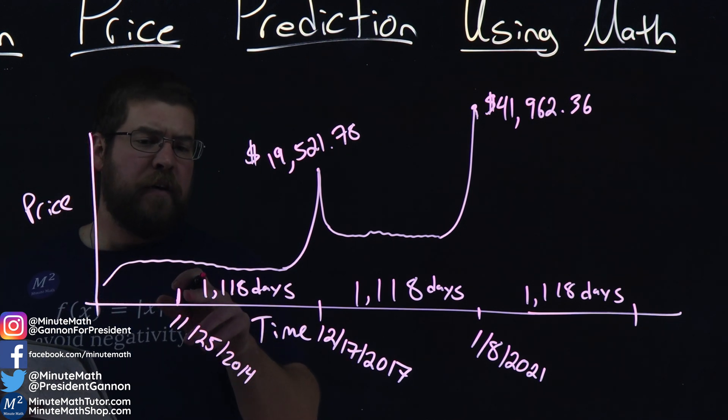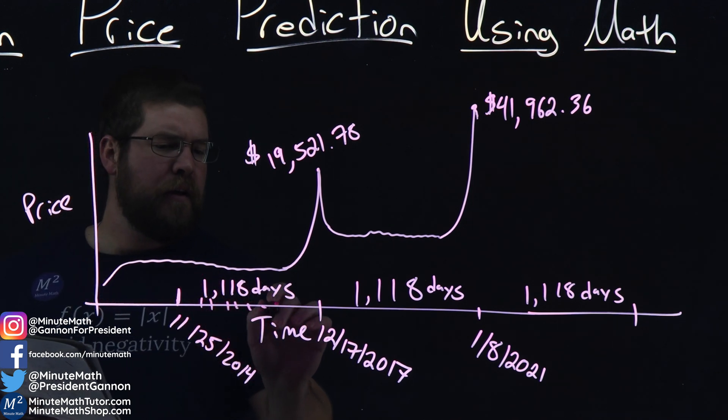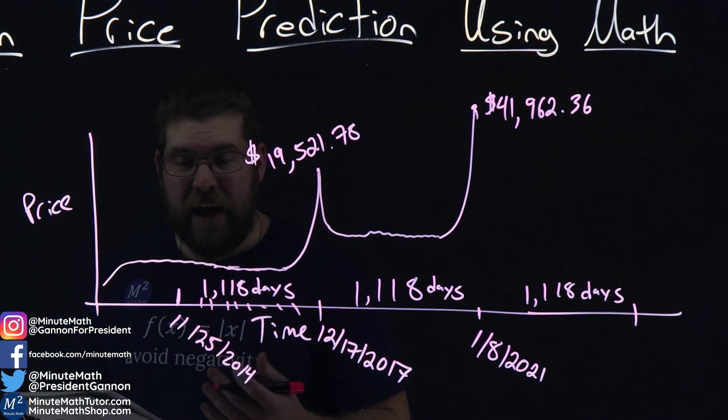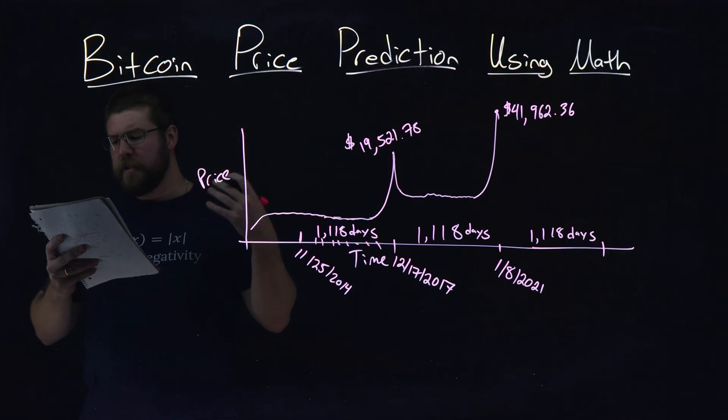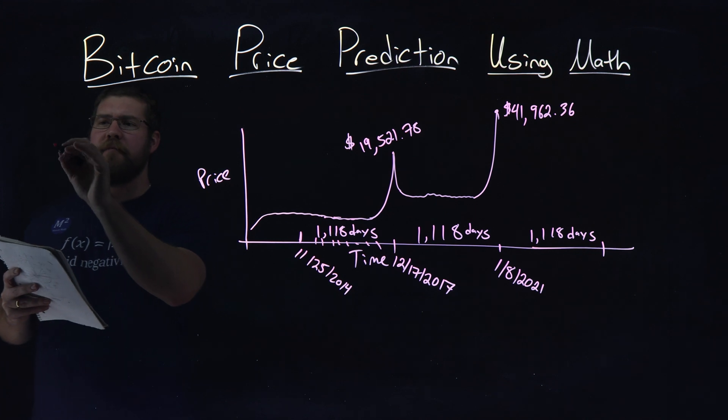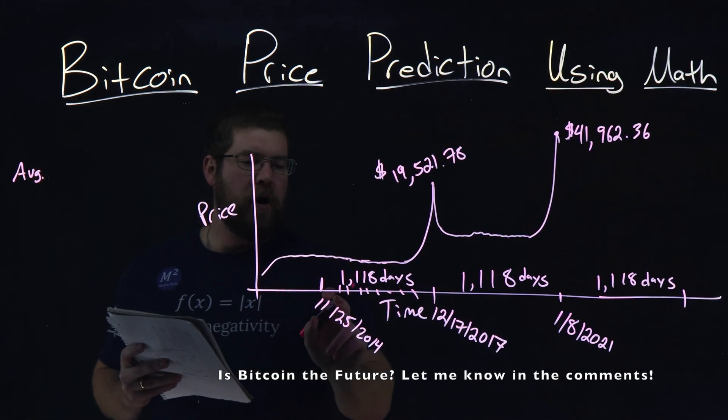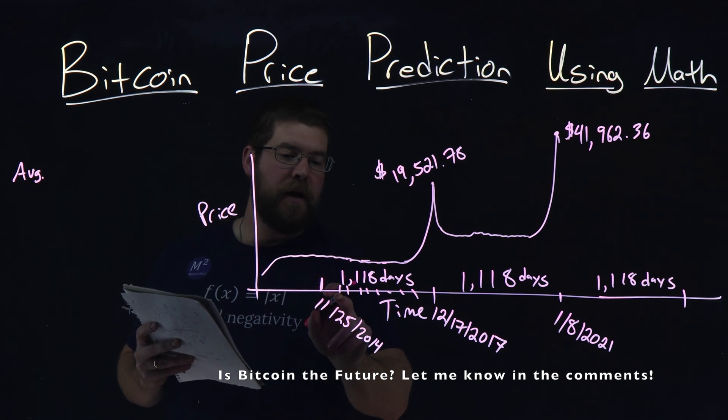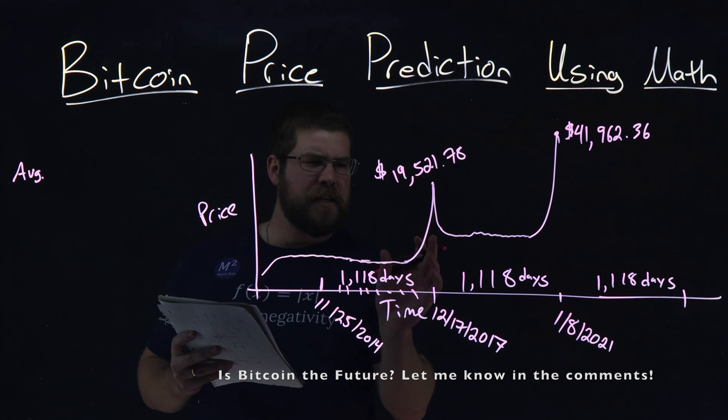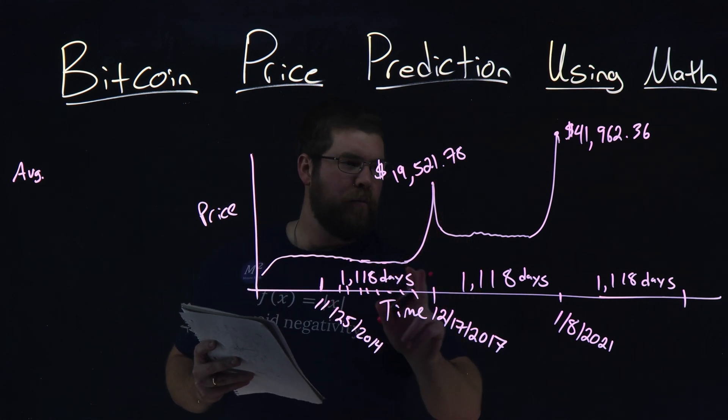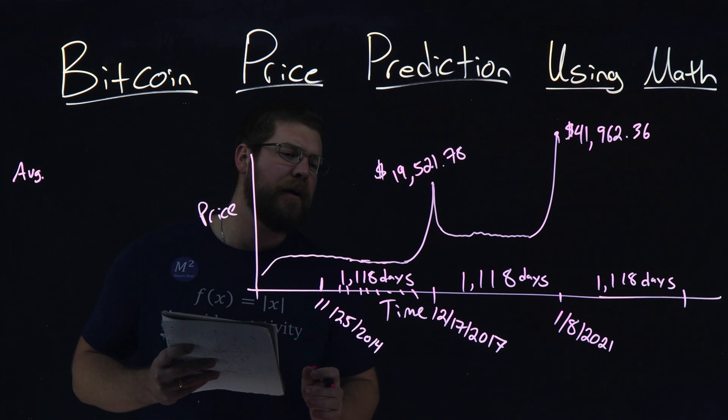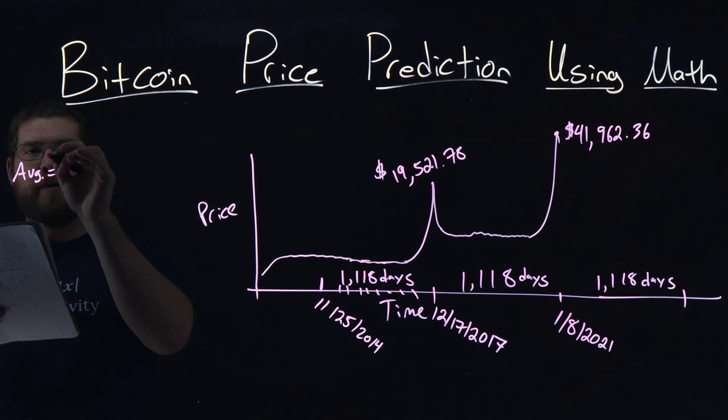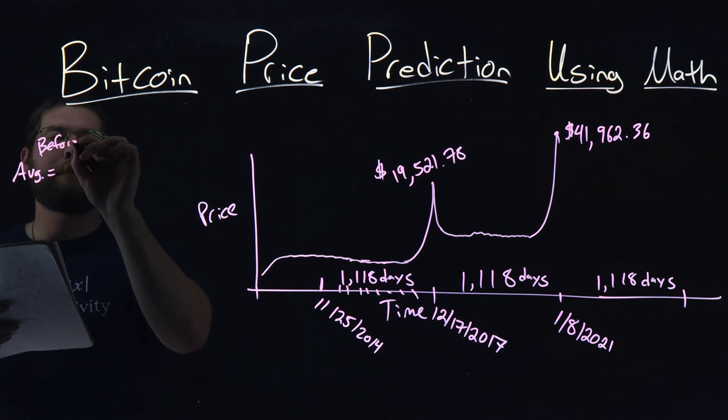So I started picking data values every 100 days. 100 days from across, and what were the prices at those days, and I averaged them. And so, before our first peak, the first 100 days, we averaged. Again, I picked every 100 days, starting with this one, not in the peak. Every 100 days up to 1,000 days. I didn't want to get too close to the sharp rise, that would kind of skew the data.